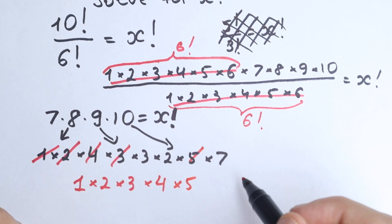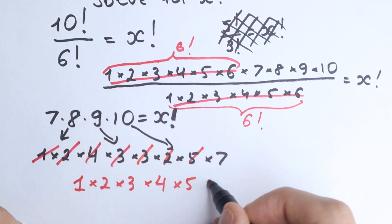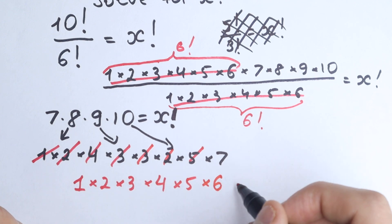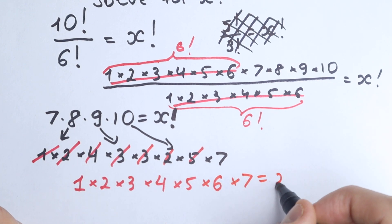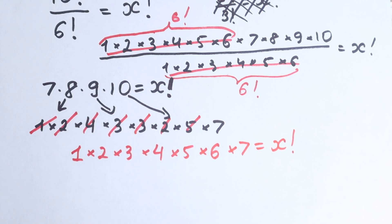Then next, we have 6, where we have 6, right here. 3 times 2 equal to 6, so I can easily cancel this, so times 6. And the last times 7, equal to x factorial, and take a look closely. Very interesting and important step right now.